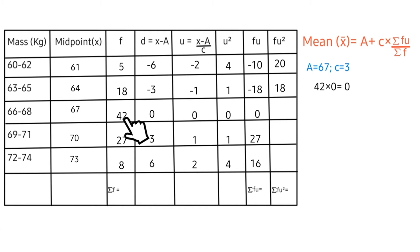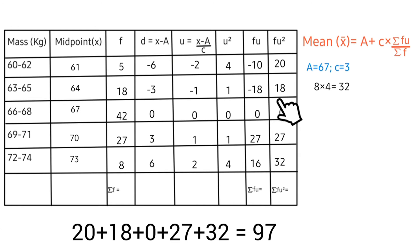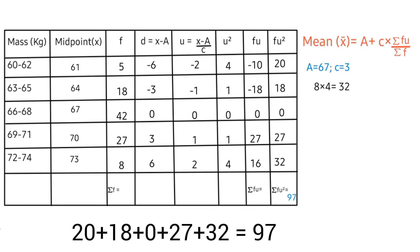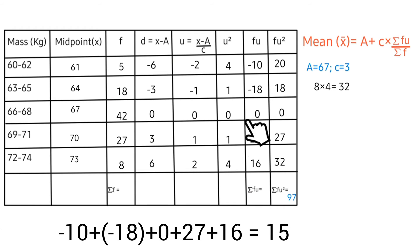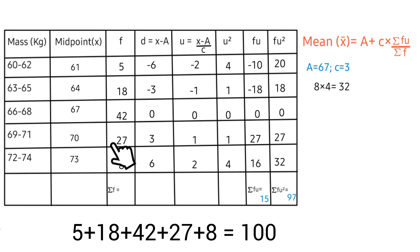Now let's sum all the columns. The fu² column sums to 97. The fu column sums to: minus 10 plus the remaining values gives 15. Summing up the frequencies: 5 plus the remaining values gives 100.